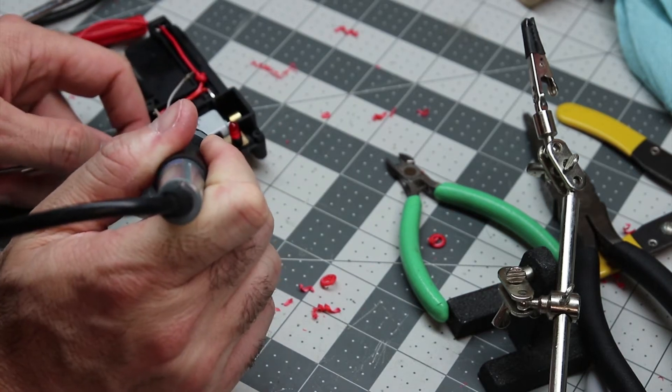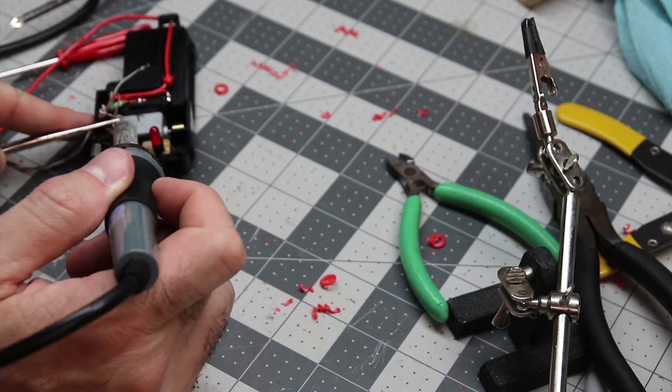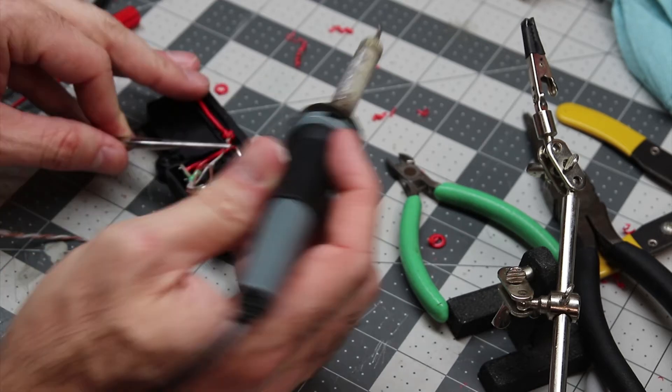They're useful for a lot of different things, getting down inside of stuff, but tweezers sometimes let go whereas these forceps hold tight so you can get in there without burning your fingers for sure. It makes things simple.